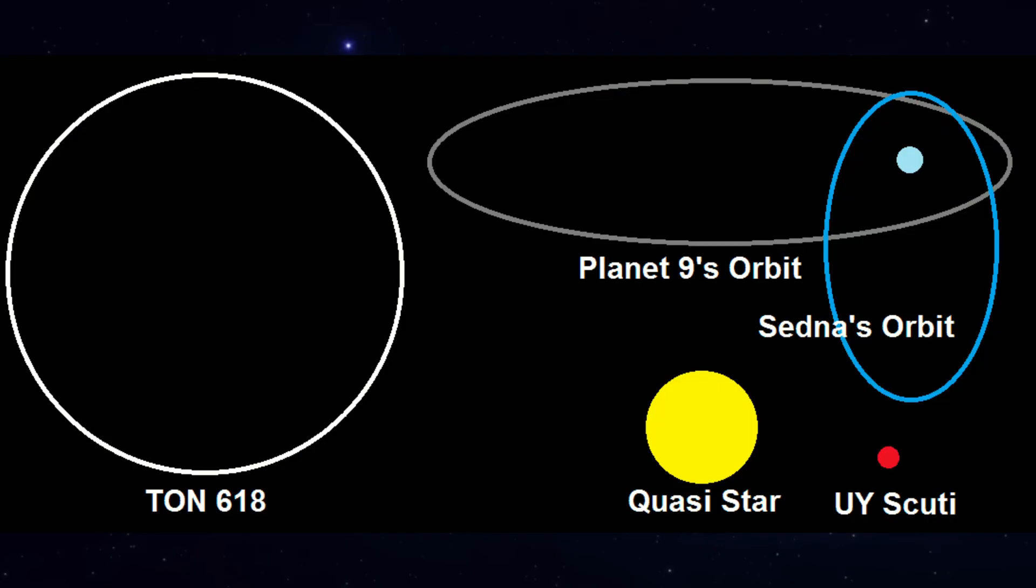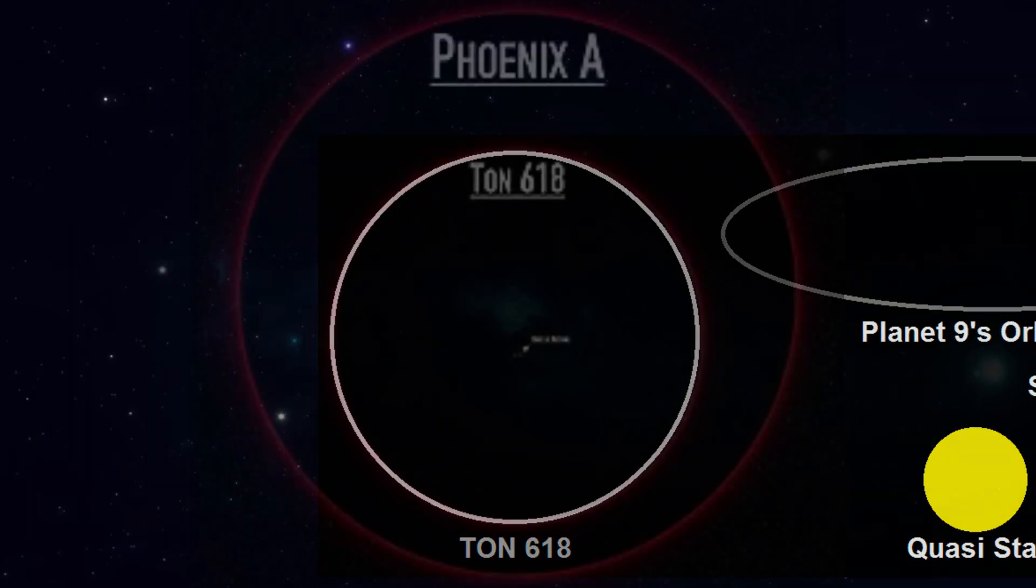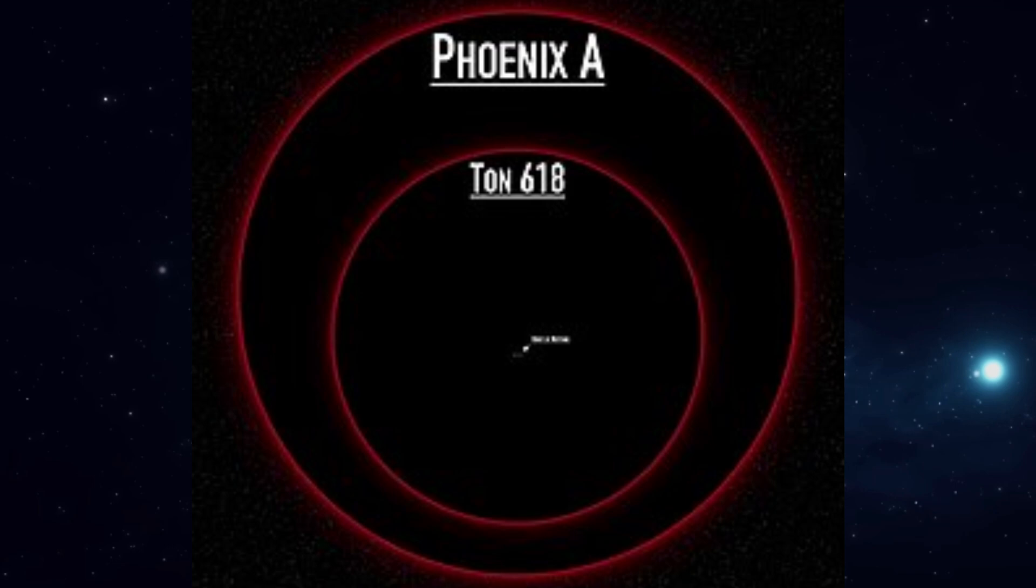Now, TON 618 was already a staggering 66 billion solar masses, but Phoenix A exceeded this by reaching 100 billion solar masses.